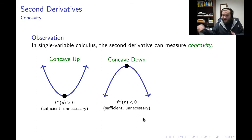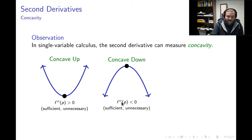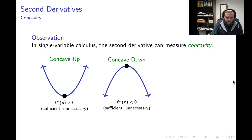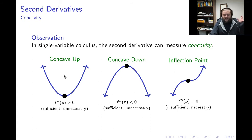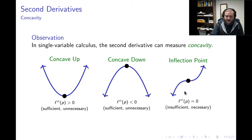You could also have concave down functions. This would happen if your second derivative is negative. Again, this is sufficient but not necessary — you could have a zero second derivative and still be concave down. But if you know your second derivative is negative, you know your function is concave down. There is a third situation, the so-called inflection point, which would occur if your second derivative equals zero, though that is not a necessary condition. These are three generic shapes: concave up associated with a positive second derivative, concave down with a negative second derivative, and inflection points with a zero second derivative.